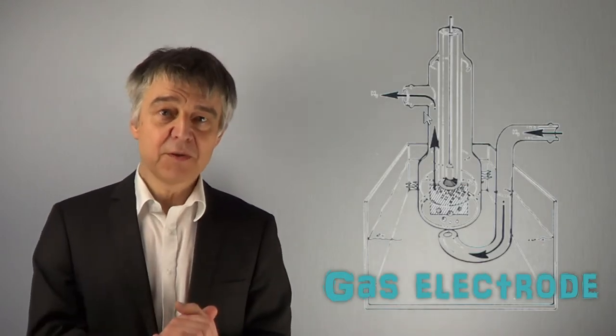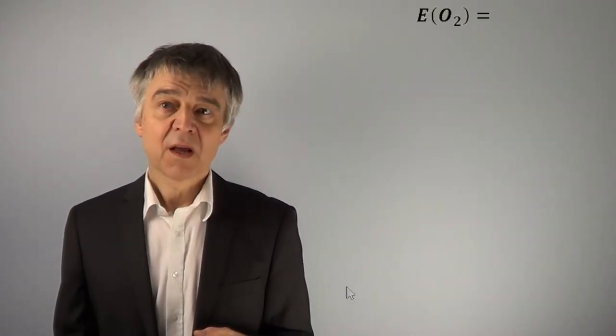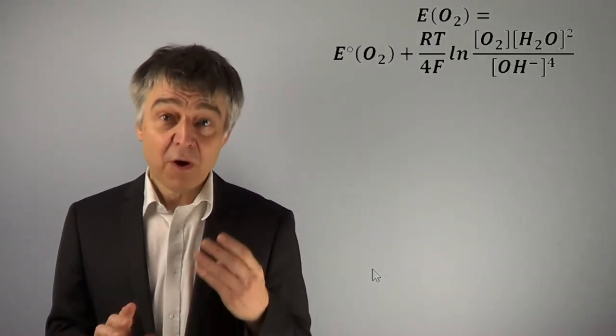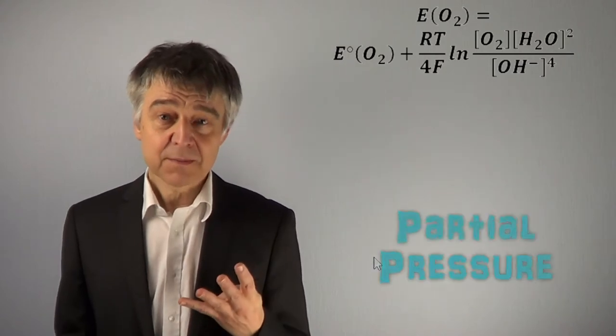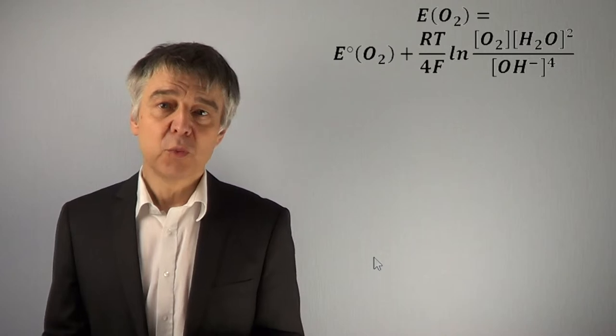For the oxygen electrode, the Nernst equation is as follows. We plug in the corresponding numerical values for exchanged electrons, partial pressure of oxygen 0.21 bars,